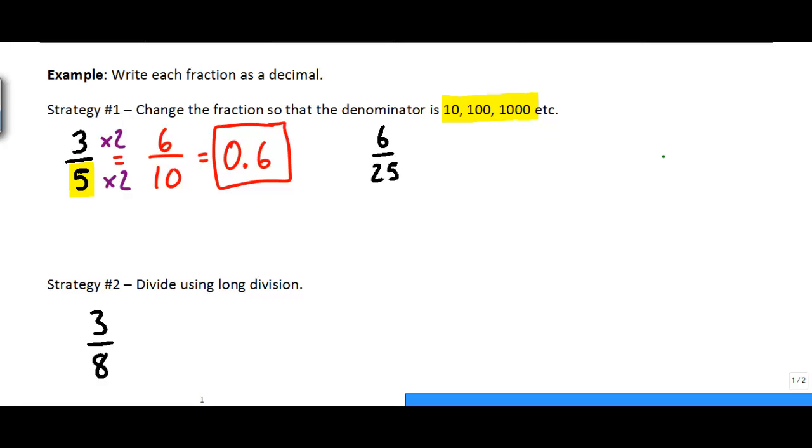Take a look at the next one, 6 over 25. Now 25 can't be turned into 10, but it can be turned into 100 fairly easily. The way I would do that is I would just multiply it by 4 to make 100. So as long as I do the same thing to the top, multiply that by 4, I'm okay. So 6 times 4 is 24. 24 over 100 means 0.24.